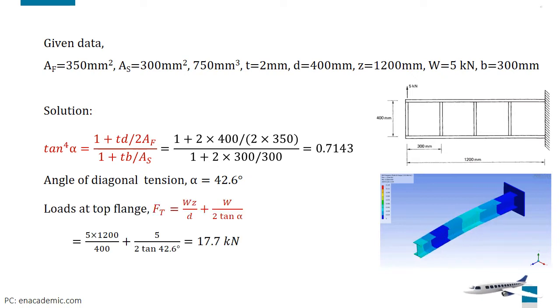Direct loads in top flange F_T is equal to Wz/d plus W/(2tanα). Solve this equation with appropriate values. Thus, the loads in top flange F_T is 17.7 kN.